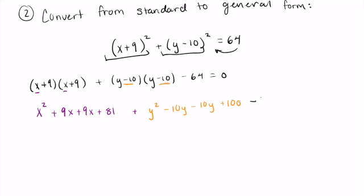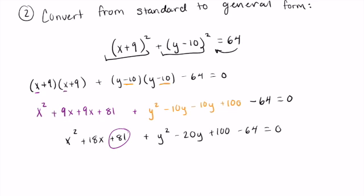y² - 20y + 100 - 64 = 0. Now go ahead and combine our constants here. So when we combine 81, 100, and -64, we are going to wind up getting 117.